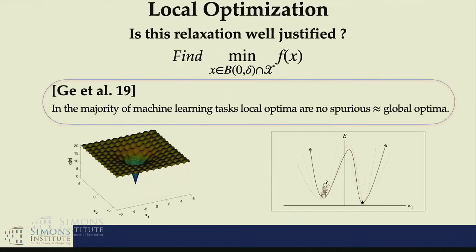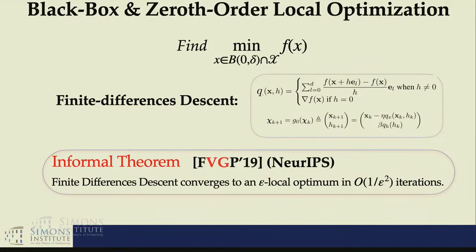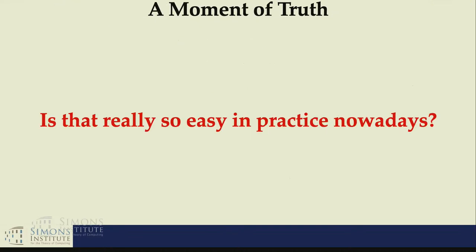Even if the problem is hard, we have enough theory that says okay, even if we cannot find the global minimum, the local minimum could suffice. Because typically in the majority of machine learning problems we have non-spurious local minima - more or less all of them have a similar value. We have analyzed very nicely the first-order gradient descent. That was my first paper in my PhD career, about the zero-order model of that.